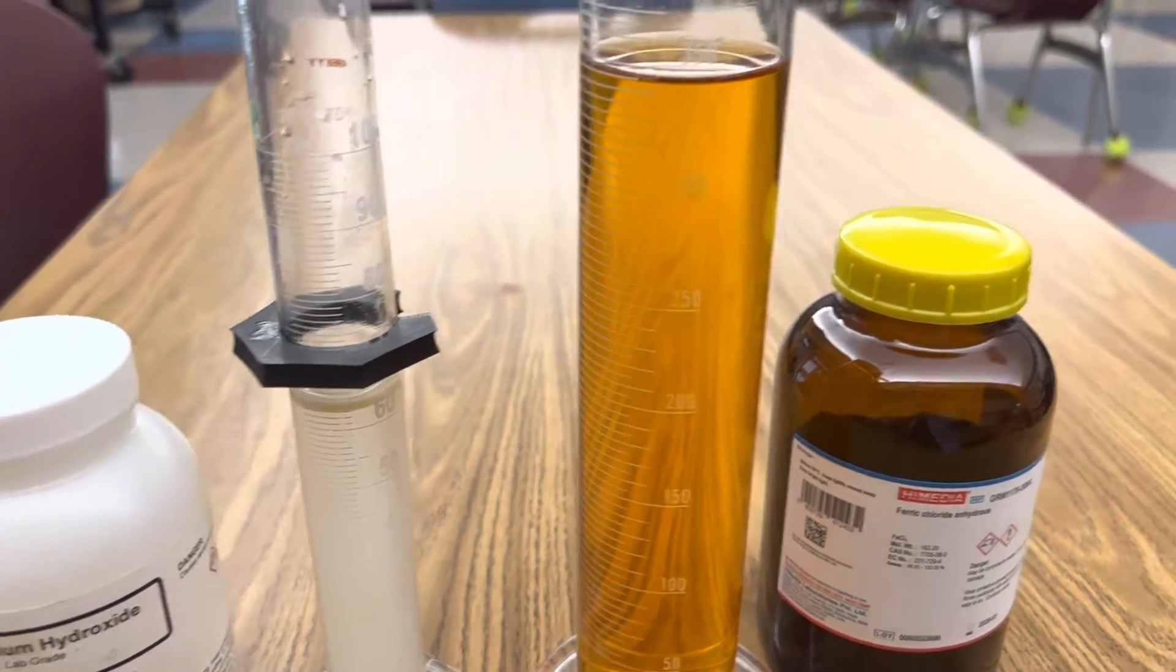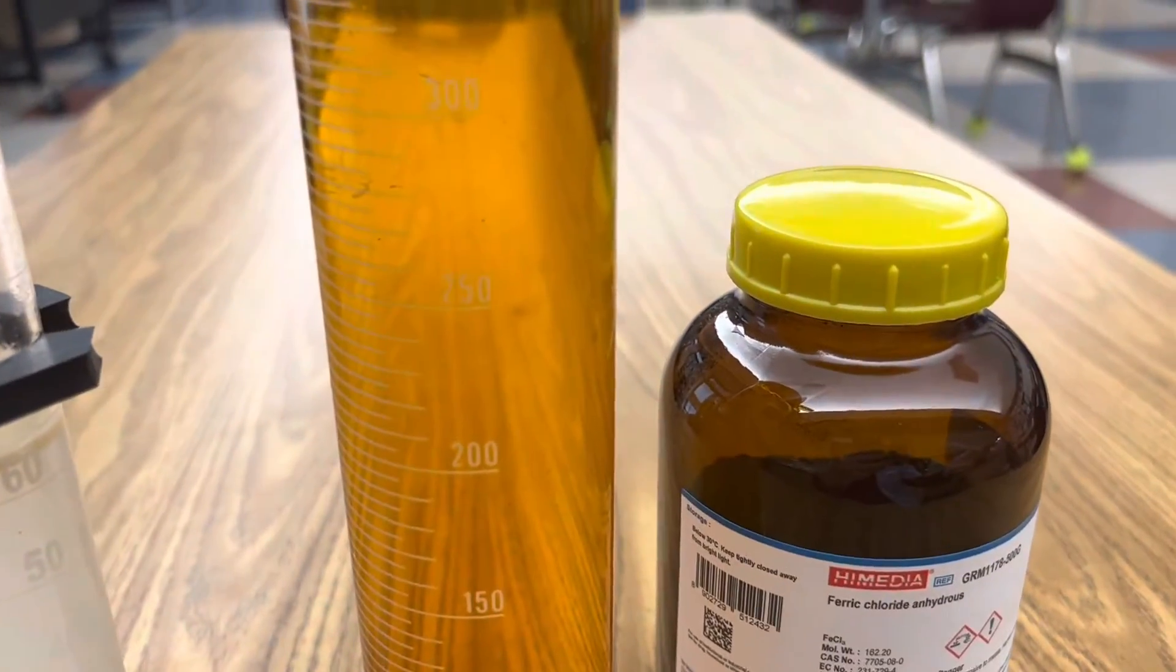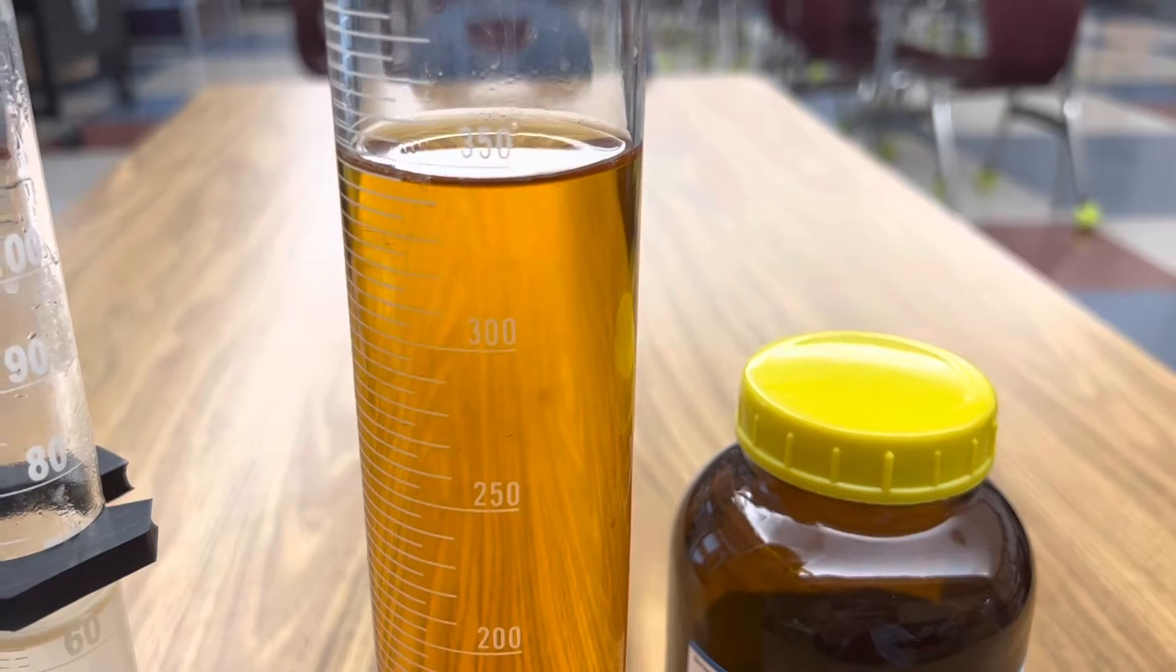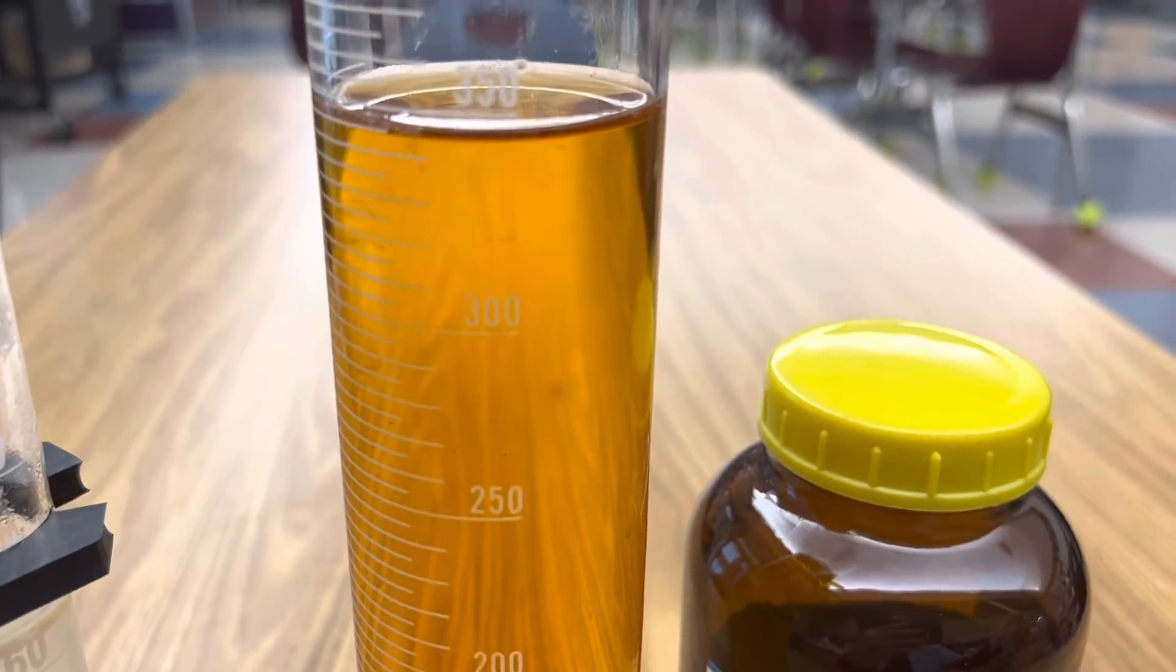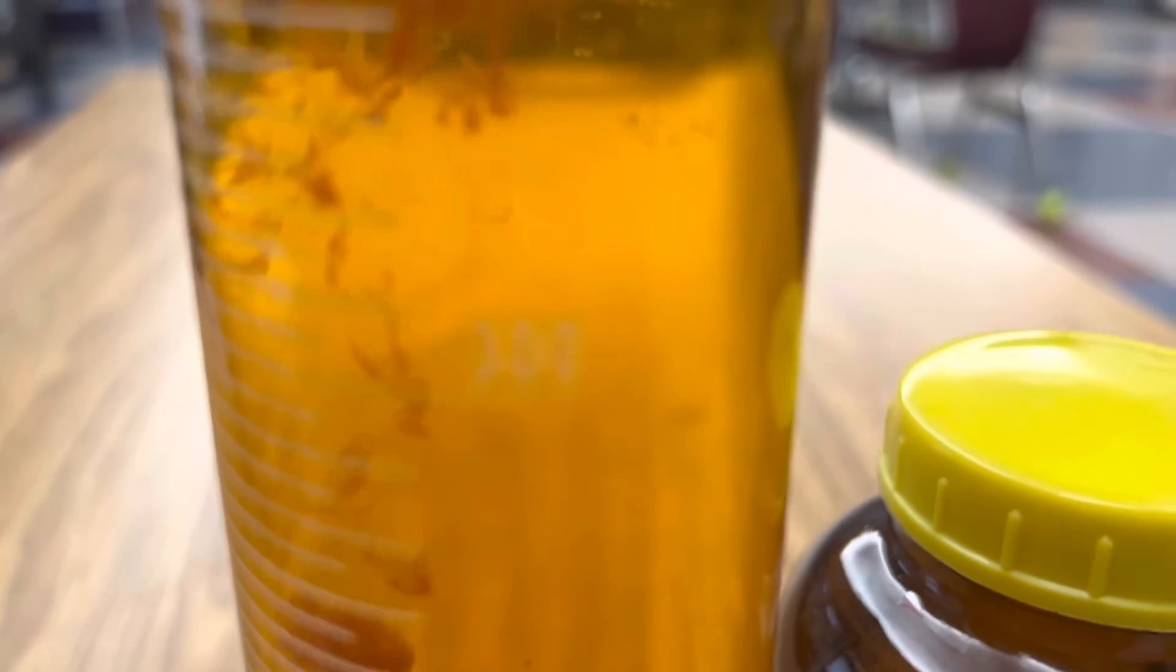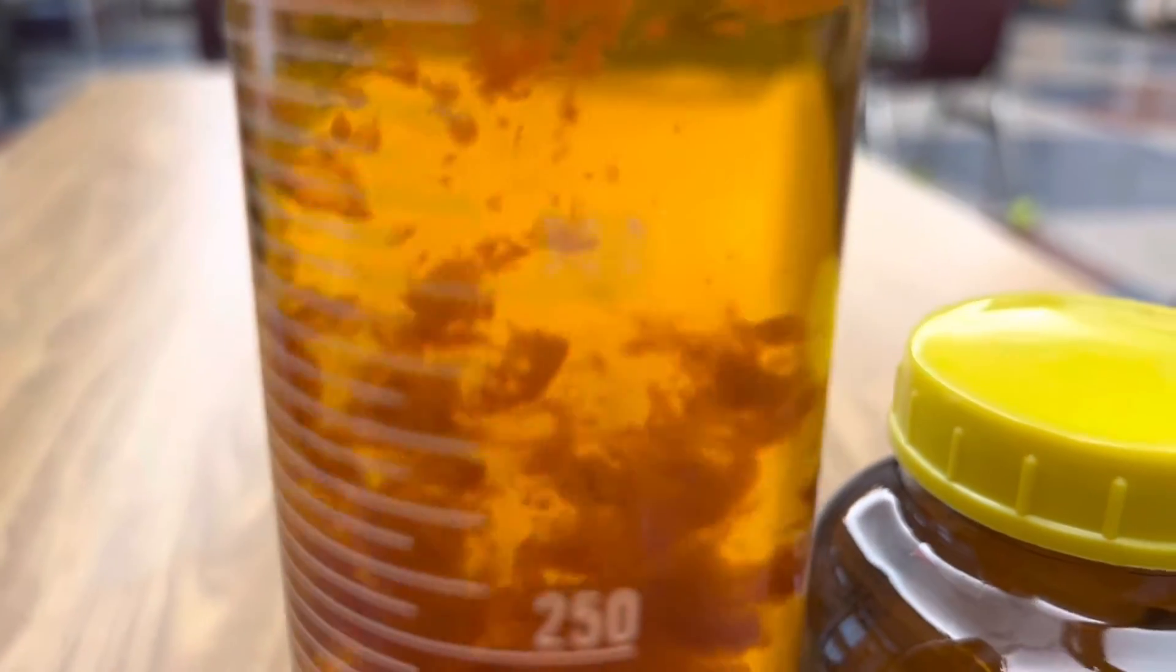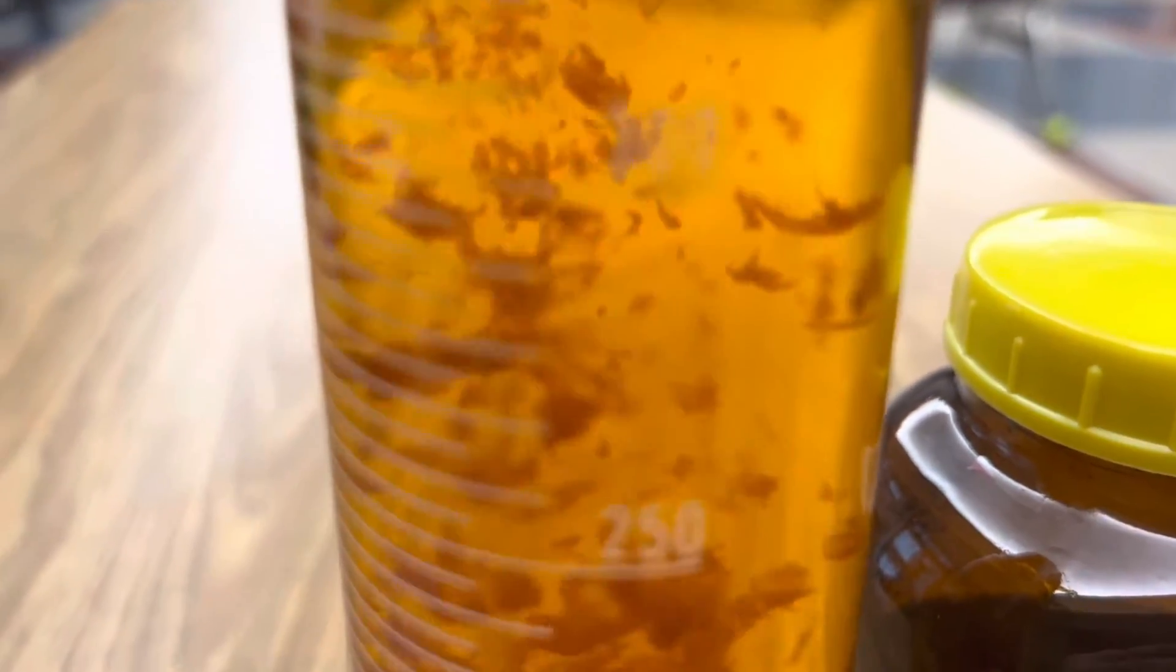Here's my solution of sodium hydroxide. You can see that it's clear. I'm gonna get close to my solution of ferric chloride and you will see the precipitation of ferric hydroxide. Here we go. Look at that. Here's a little more. Just awesome.